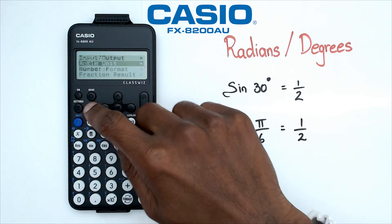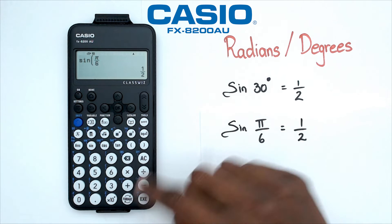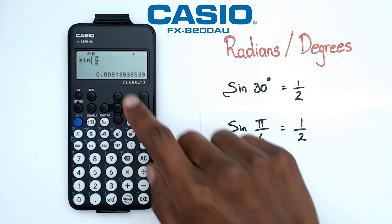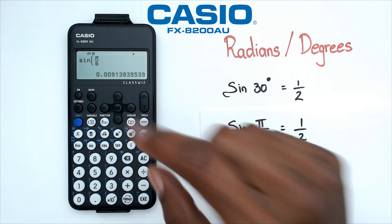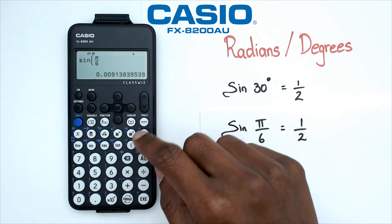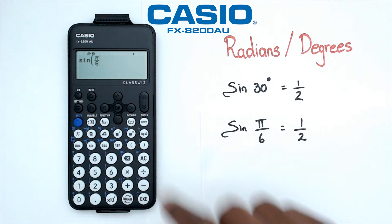And let's say I'm trying to work out sine of pi over 6. The problem is because it's in degrees, so what you could do is there is one more button that you can use.